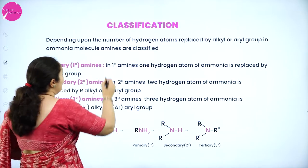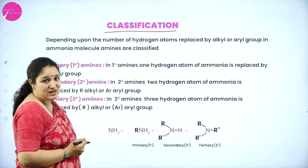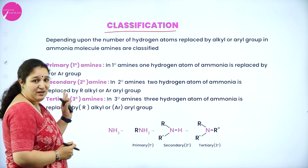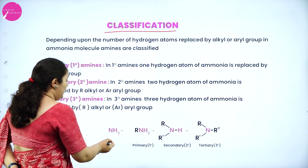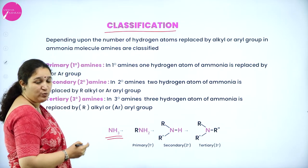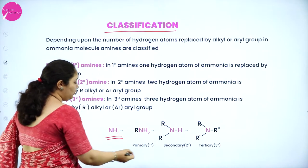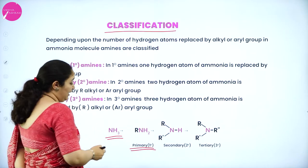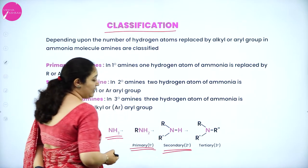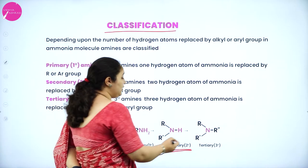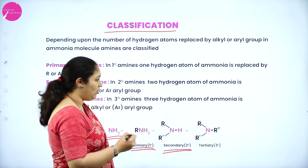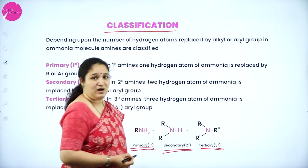Next we will see about the classification — how are amines classified? We have primary amines, secondary amines, and tertiary amines. If one hydrogen atom is substituted with an alkyl or aryl group, we get a primary amine. If two hydrogen atoms are substituted, we get a secondary amine. And if all three hydrogen atoms of ammonia are substituted with alkyl or aryl groups, we get tertiary amines.